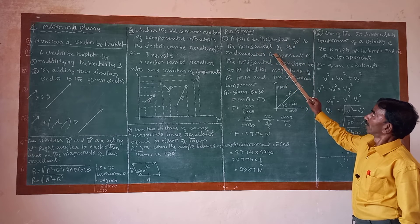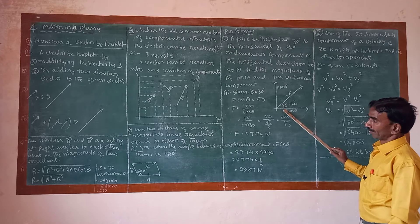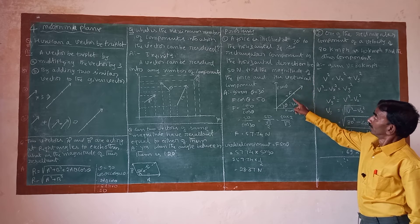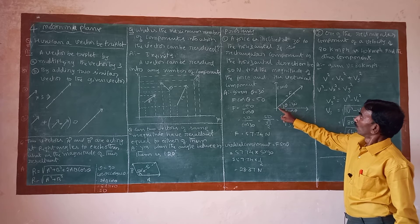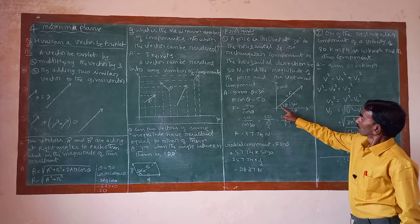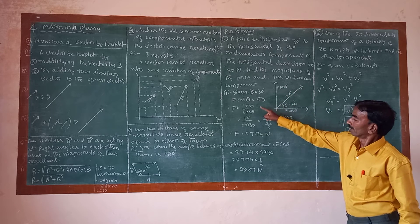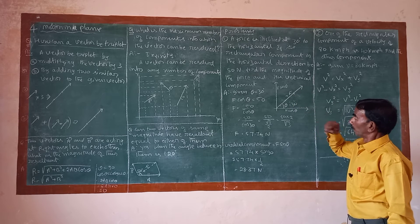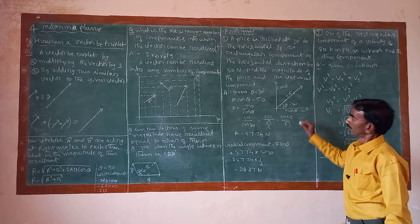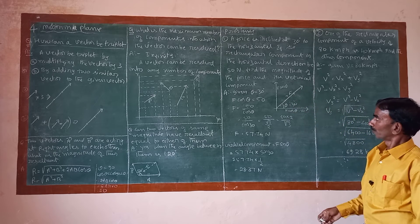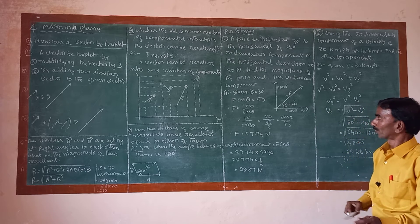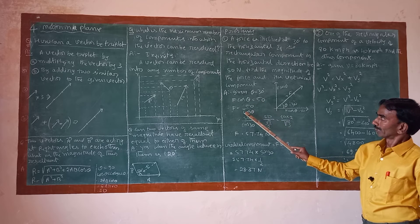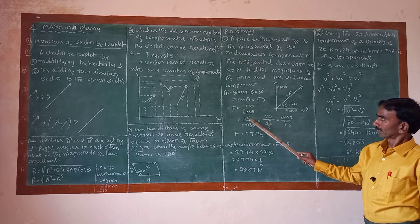A force is inclined at 30 degrees to the horizontal. If its rectangular component in the horizontal direction is 50 N, find the magnitude of the force and its vertical component. The horizontal component is F cos theta equals 50. So F equals 50 divided by cos 30.